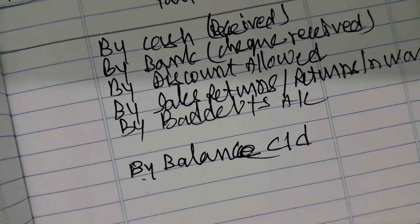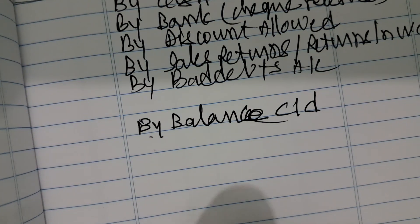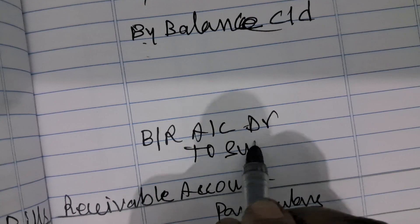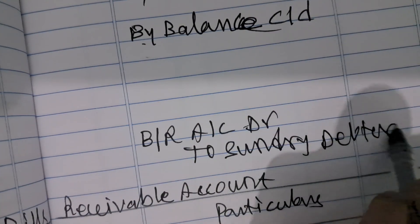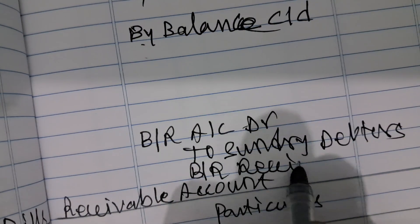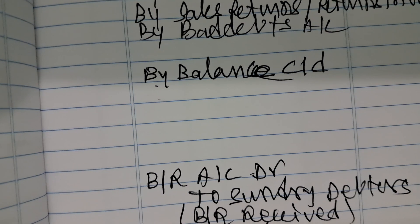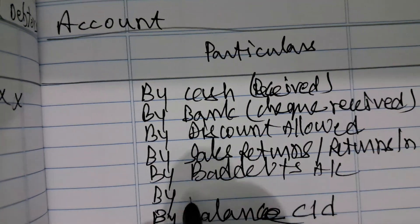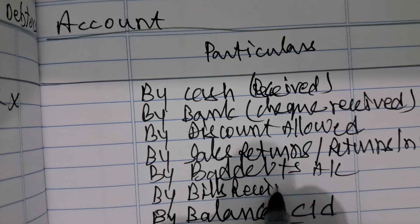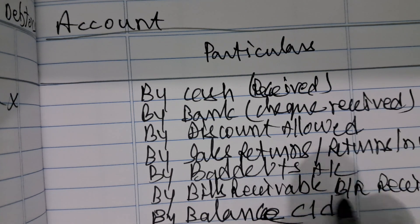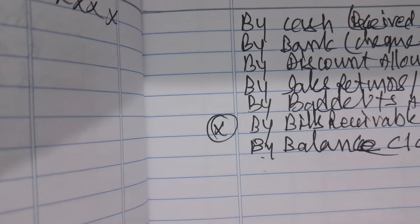Bills receivable received from debtors: the entry is Bills Receivable Account debit to Sundry Debtors Account. This entry should be posted in the Total Debtors Account on the credit side as 'By Bills Receivable' — when bills receivable are received from debtors.